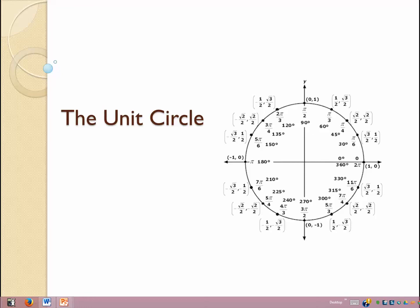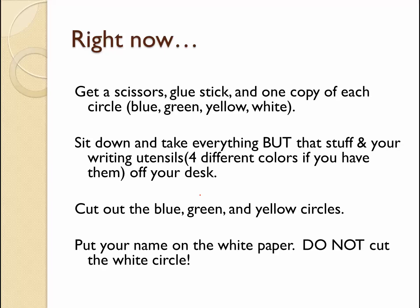Welcome students, this is Ms. Medina and we're going to go through discovering the unit circle. This is what your unit circle is going to look like, but we're going to add a dash of color to it. You need to make sure that you have access to scissors, a glue stick, and one copy of each of the circles — one in blue, green, yellow, and white. You can do this as a group. Cut out the blue, green, and yellow circles; do not cut out the white circle. Put your name on the white paper, and you can pause this video as needed.